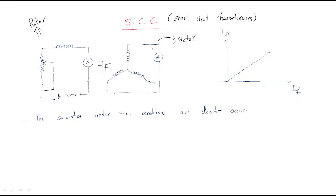By varying the field current on the x-axis and measuring the short circuit current on the y-axis, we get the short circuit characteristics. The field current is gradually increased from zero until the short circuit armature current reaches its maximum safe value.